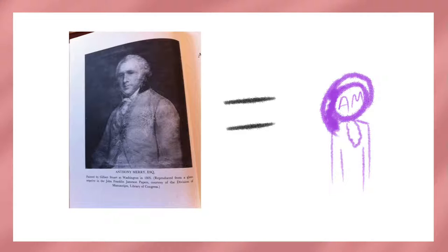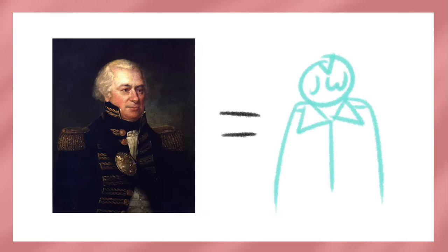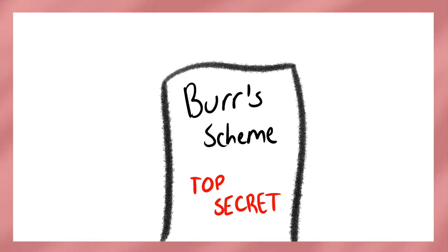He meets this one guy, Anthony Merry, a British minister liaison, and then this other guy, James Wilkinson. Dude is a senior general and then governor of this chunk because Burr is friends with Jeff and also VP.